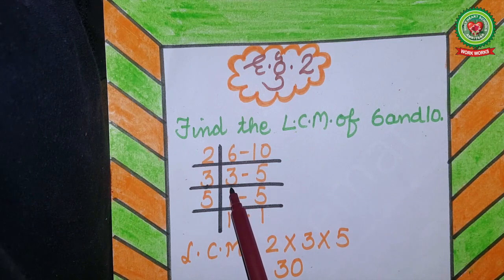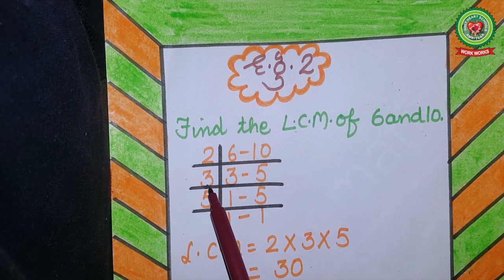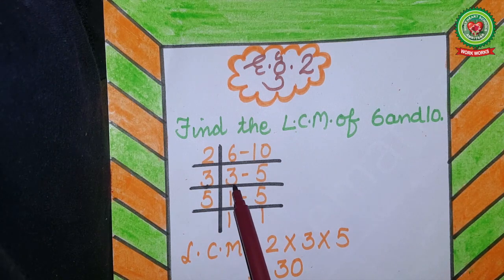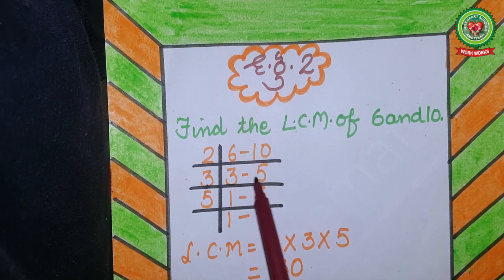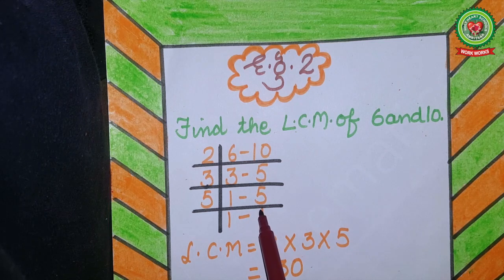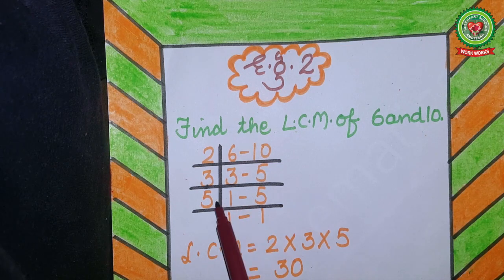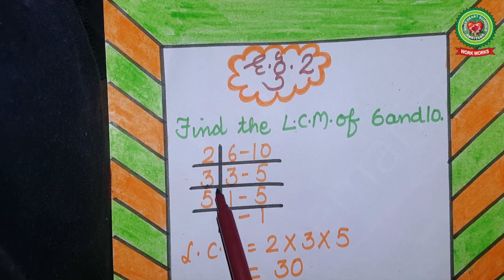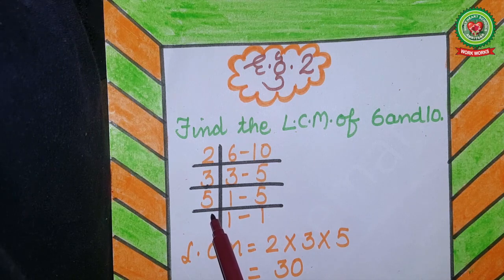Now 3 is a prime number, so divide 3 by 3. On the 3 times table, 3 comes on 1 — 3 ones are 3. On the 3 times table, 5 doesn't come, so bring 5 down as it is. Now divide 5 by 5. On the 5 times table, 5 comes on 1.